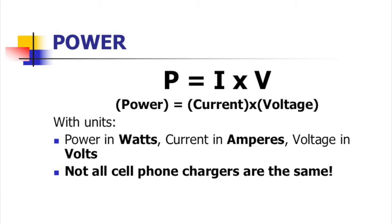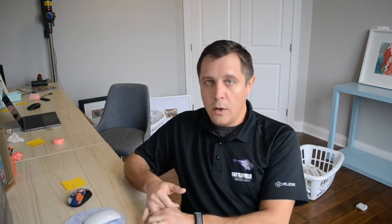The equation for power is P equals I times V — P equals IV. P is power measured in watts, I is current measured in amps or amperes, and V is voltage measured in volts.